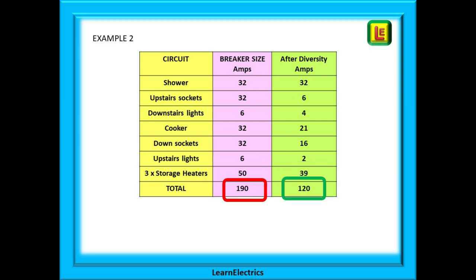In this second example, we have a problem, which is where we have to apply some extra logic and common sense to our installation demand. Before diversity, adding up the breaker sizes, we have 190 amps, and after diversity 120 amps. This is clearly in excess of the 100 amp main fuse installed in most dwellings. Is this going to be a problem?